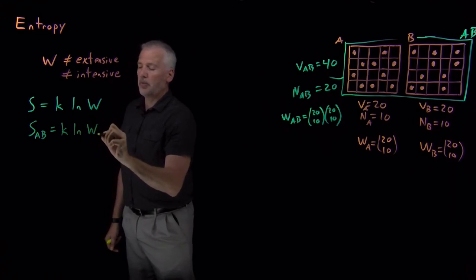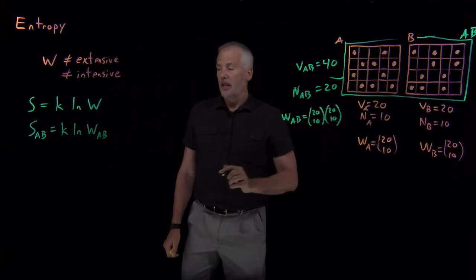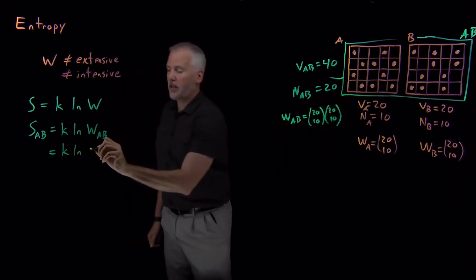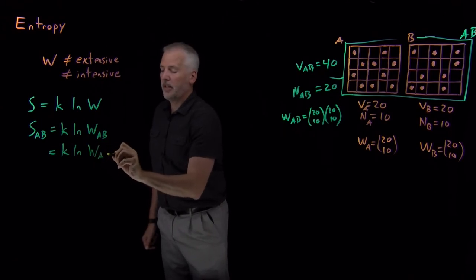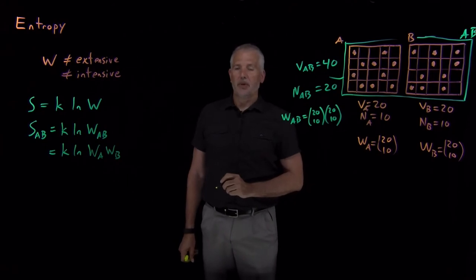If I want to know this new property for the combined system A and B put together, we've just convinced ourself over here that the multiplicity for the combined system is the product of the multiplicity of A and the multiplicity of B.